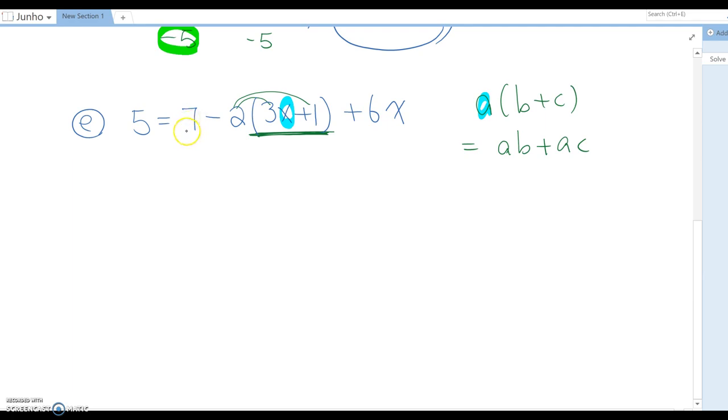Don't subtract 7 and 2 because 7 is a single term, but 2 and this one is one term. So you have to simplify this term before doing anything else. Therefore, this becomes 5 equals 7 minus 2 times 3x becomes 6x, and then minus 2 times plus 1 becomes minus 2, plus 6x.